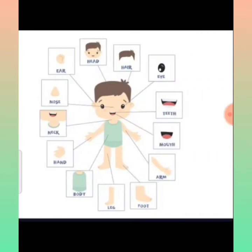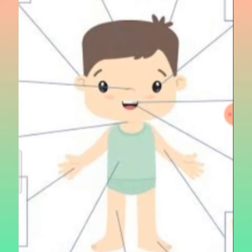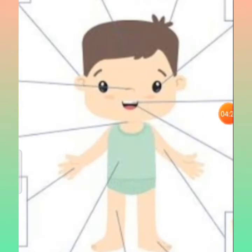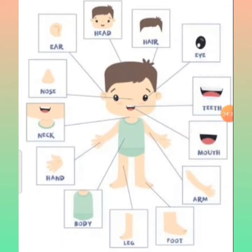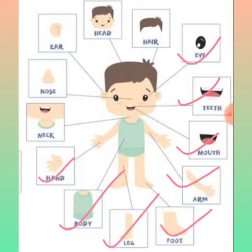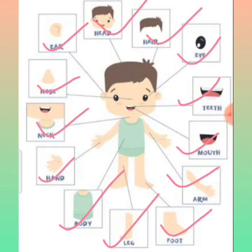Next, let's look at external organs. External organs include: hair, eyes, teeth, mouth, arm, foot, leg, body, hand, neck, nose, ear, and head. These are external organs — we can see them. But we are not able to see internal organs.